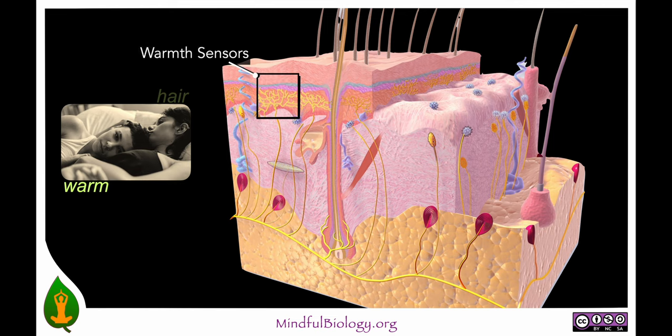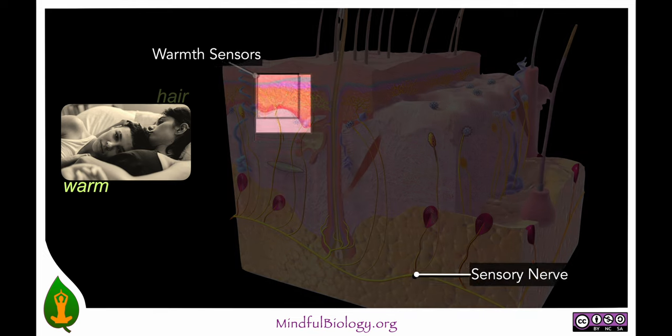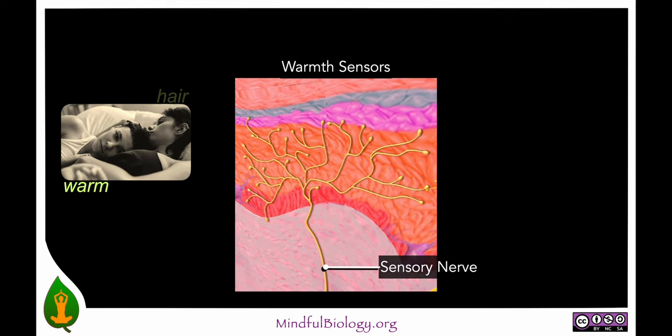We detect warmth through sensors in the skin that are sensitive to temperature. They send information about temperature into a sensory nerve, which travels to the spinal cord and then reaches the brain and consciousness. Looked at under higher magnification, we can see how the warmth sensors have very fine fibers that spread through the skin and end in little bulbs. There are similar sensors for cooler temperatures.